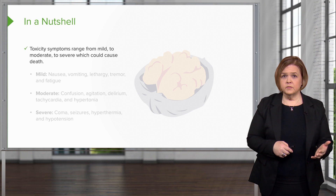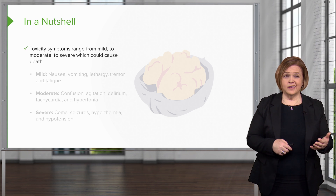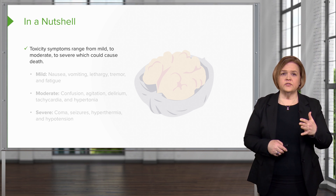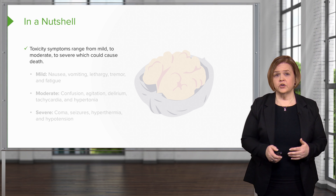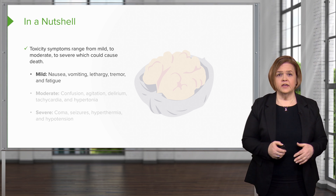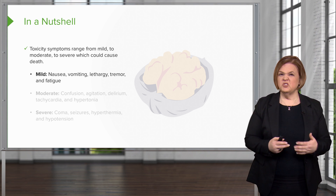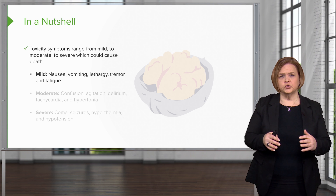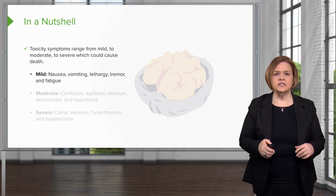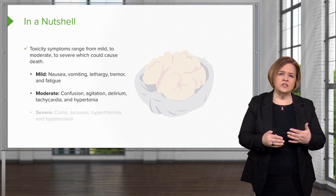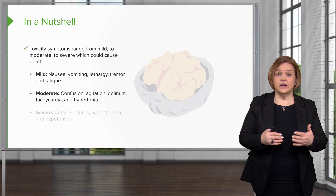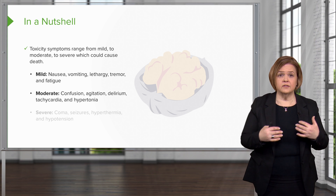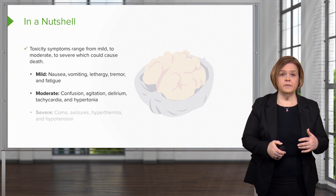Toxicity symptoms range from mild, while uncomfortable, to moderate and severe, which could cause death. Mild: GI, nausea, vomiting, feeling tired, maybe a little tremor and fatigue. Moderate, you start to see some CNS impact with confusion, agitation, delirium, tachycardia, and hypertonia.